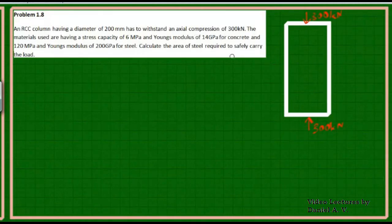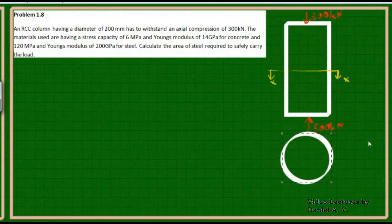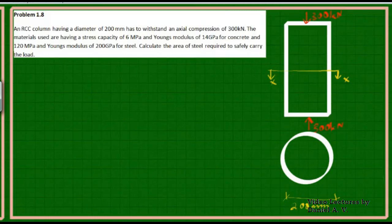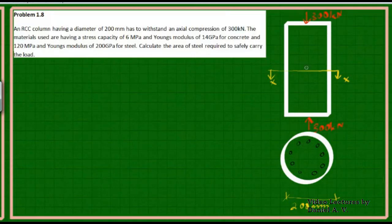The column has a diameter of 200 mm. Taking a cross-section, the section looks like a circle of diameter 200 mm. In an RCC section, we have both concrete and steel. Steel reinforcement bars are provided — in plan view you see circles, and in elevation (cutting through the length), you see vertical steel rods.